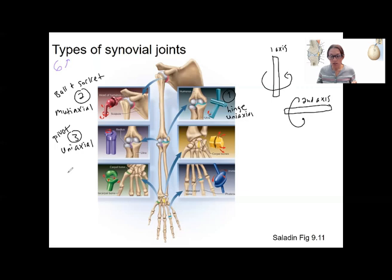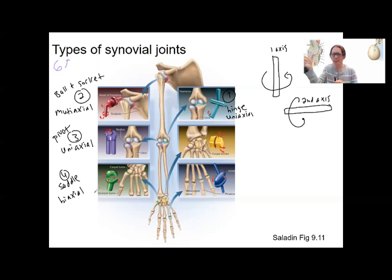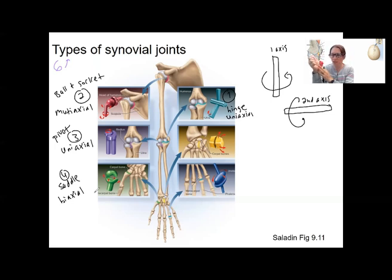Now for biaxial joints — ones that can move in two different planes. Let's do the saddle joint first. It's called that because it's like a rider on a saddle. This is biaxial, so it can move in two different planes. Think about your thumb — it almost seems like it can rotate, but it's not a ball and socket joint. Looking at that picture, your thumb can move in two different planes. That's an example of a biaxial joint, just at the very base of the thumb.